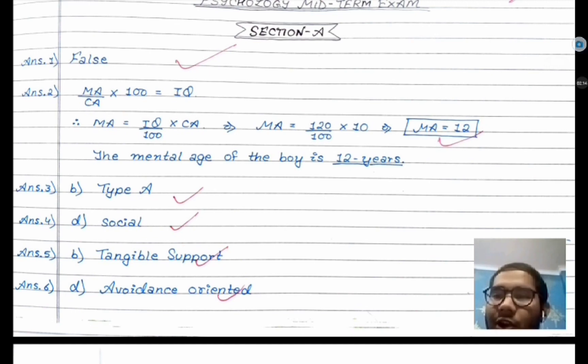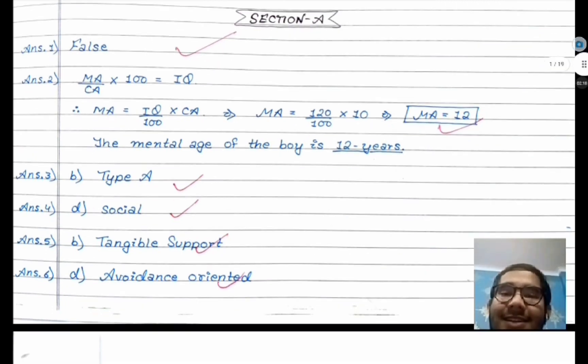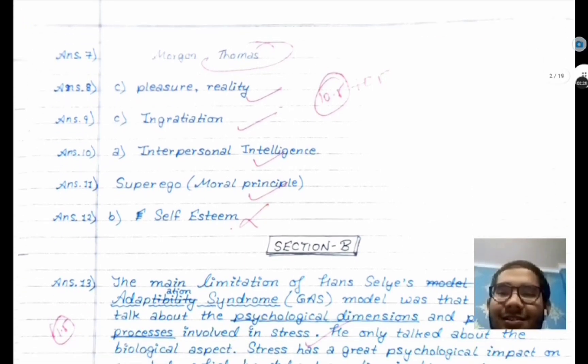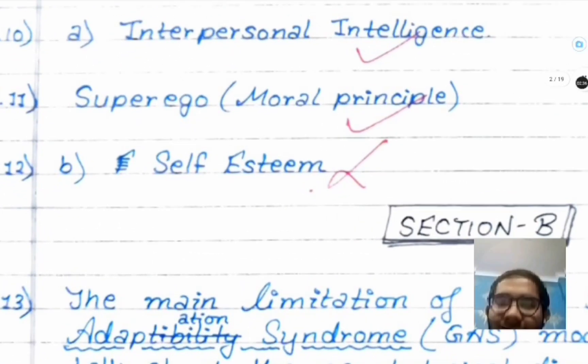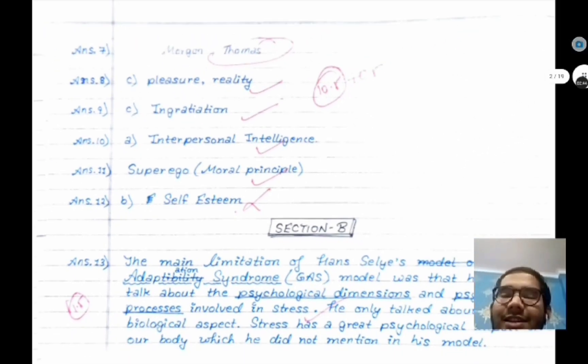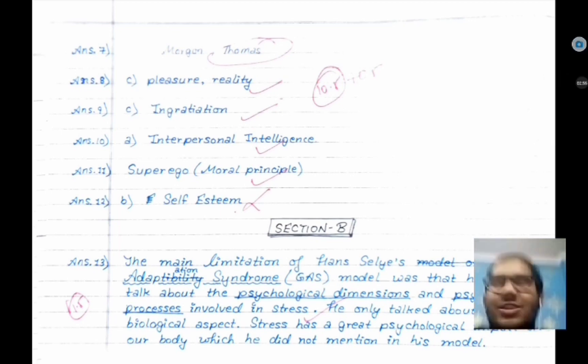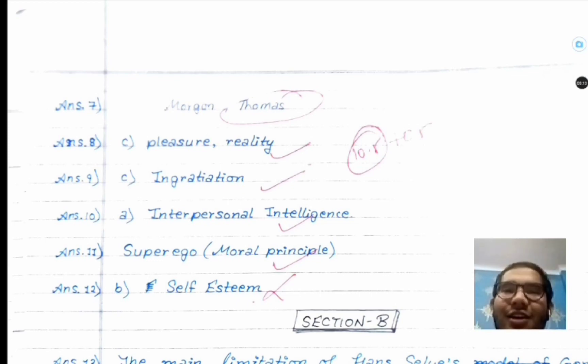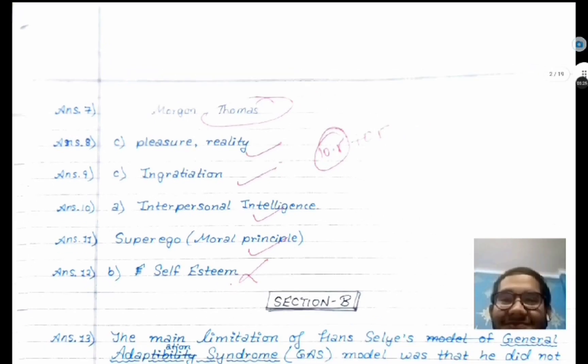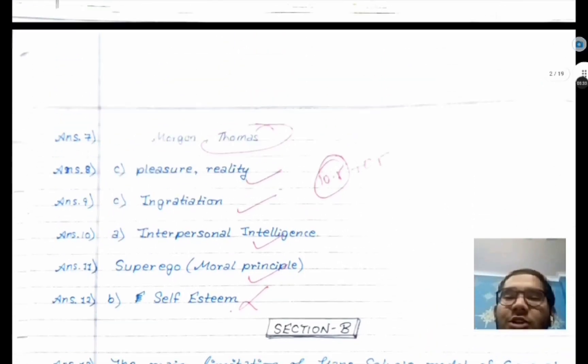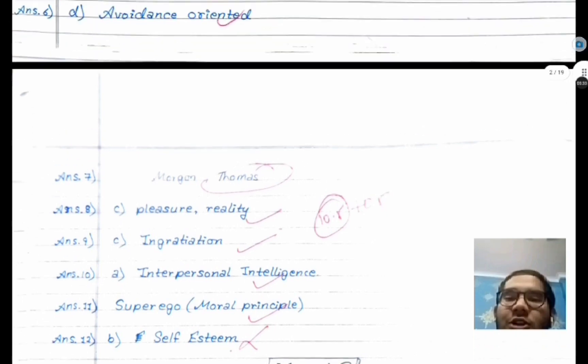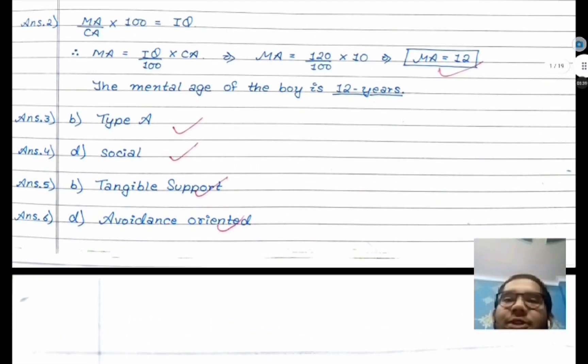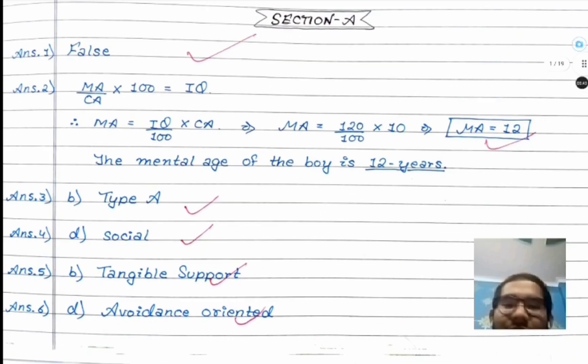You have to see what works best for you. For me, it was right to start from Section A, and you can see according to your convenience. As you can see, this is Section A in which I got maximum questions right, though not all. This is how you can attempt Section A. There are all MCQs in Section A, so there is no problem solving here. Everything is becoming easier.